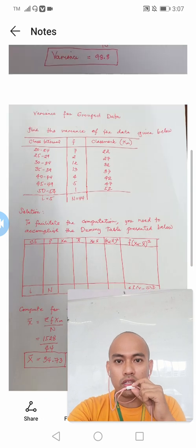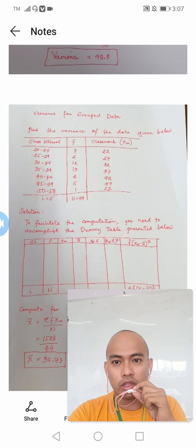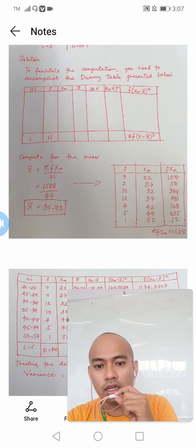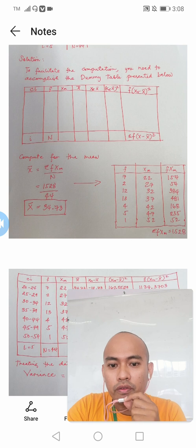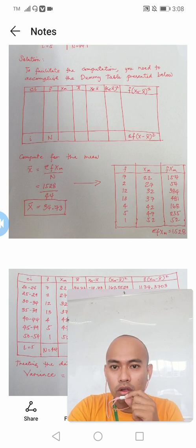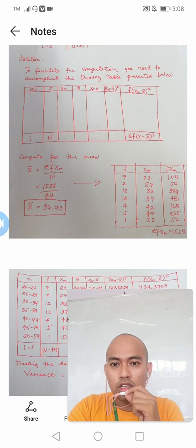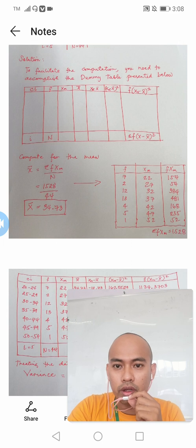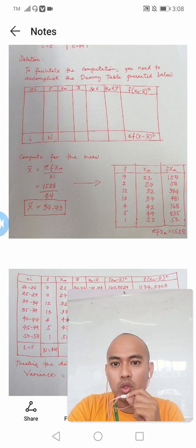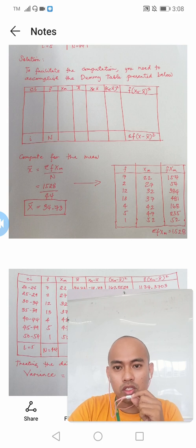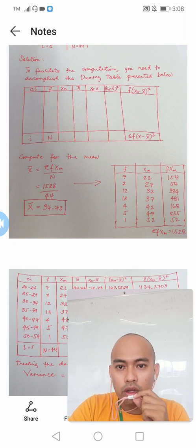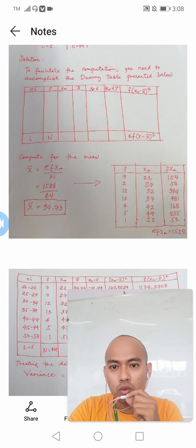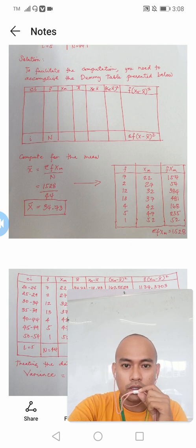Considering the three columns given, we have class interval, frequencies, class mark plus the sum of the frequencies and the class size. We will add other columns for this table and these are the mean, the difference between the class mark and the mean, the square of the difference, and the last column we will multiply the frequency and the square of the differences. So let's work first with the value for the mean. Since this is grouped data and we have given the class mark of this given grouped data, so we can now utilize the class mark formula to find the mean. It is given by the formula summation of the product of f and x sub m all over capital letter n. So the value of your summation of the frequency times the class mark is equal to 1528. All over 44 and we need to divide the two and we will come up with a value of the mean which is 34.73.